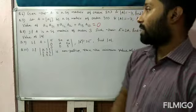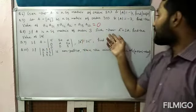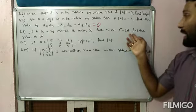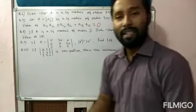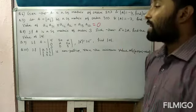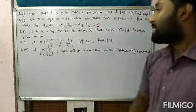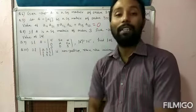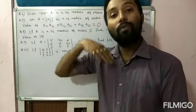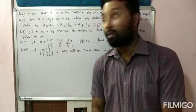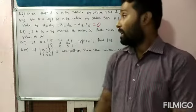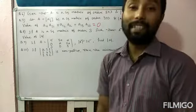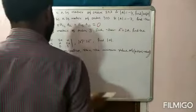Question 8: if A is a square matrix of order 3 such that A² = 2A, find the value of det(A). There is no determinant sign in the given equation, so we take determinant on both sides. det(A²) = det(2A). We need det(A), so taking determinant on both sides is the approach.